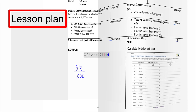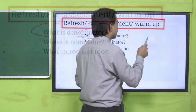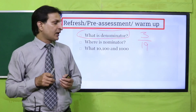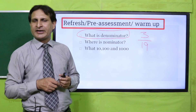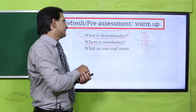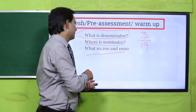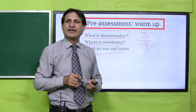Lesson plan हमारे description box में से download कर सकती है। Pre-assessment की तरफ चलते हैं: denominator क्या है? कोई भी fraction write करें — जैसे मैंने यहां 3 over 19 fraction write की है। इसमें हर student ने जो fraction write की है उसका numerator और denominator identify करना है और notebook पर write करना है। Numerator कहां पर होता है? And what are 10, 100, and 1000?